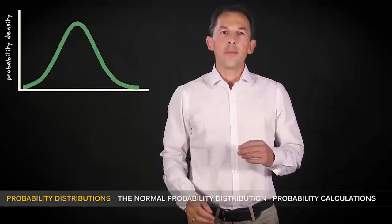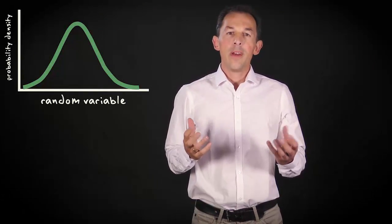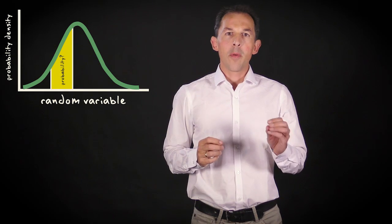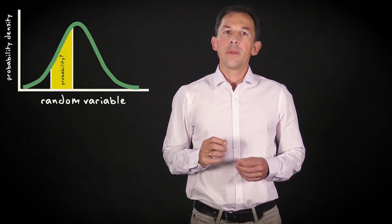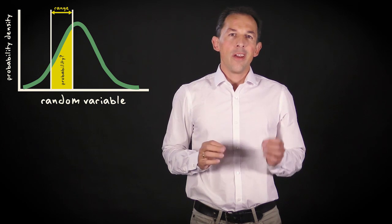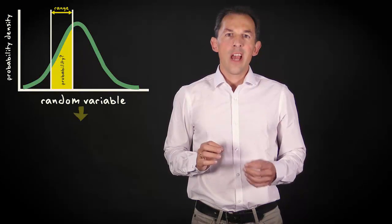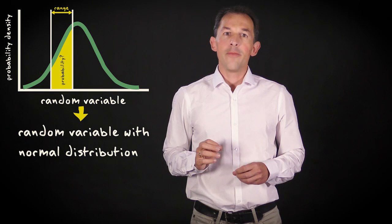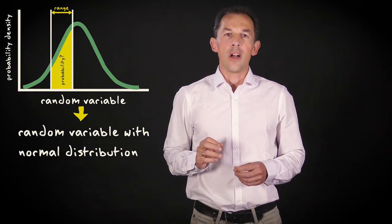If you know the probability distribution of a random variable, it's possible to calculate the probability that this variable falls within a certain range. In this video I'll explain how that works using a normally distributed random variable as a concrete example.